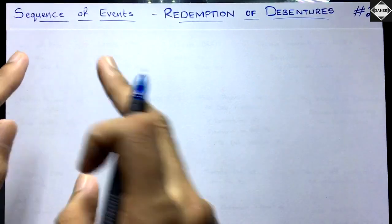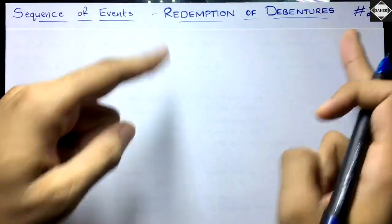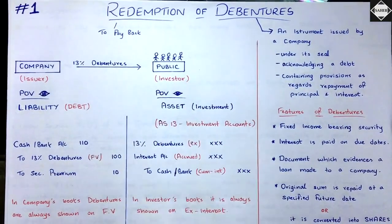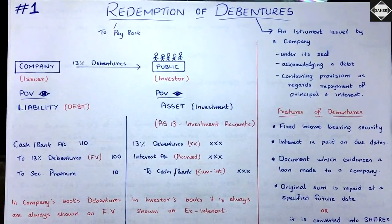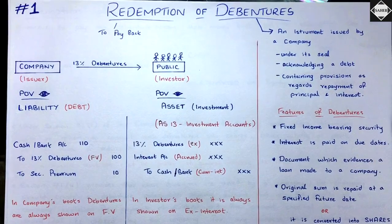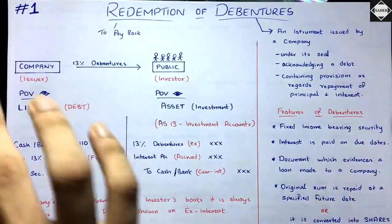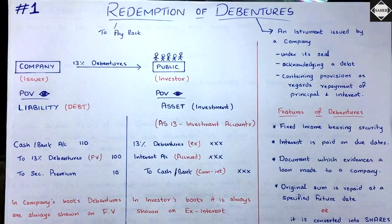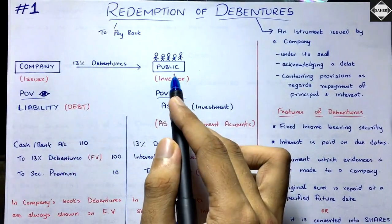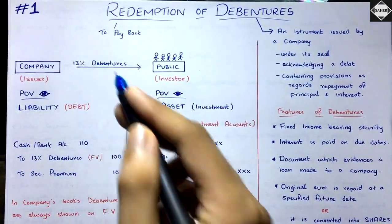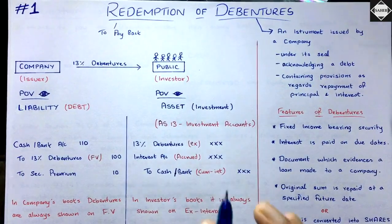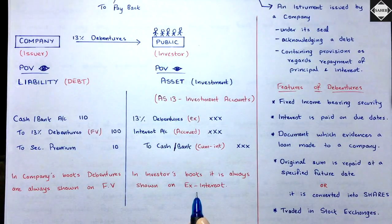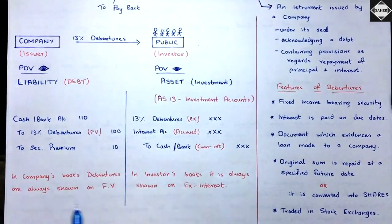Before going into the sequence of events, let's recall what we did in the first video — the introduction of this chapter. We started by understanding basic concepts of debentures such as issue, meaning, and features of debentures. We do this chapter completely from the company's point of view. For the company, debentures are a liability; for debenture holders, it's their asset. In the investor's books, accounting is done as per AS 13 investment accounts, with debentures shown at the ex-interest price. In the company's books, debentures are shown at face value.